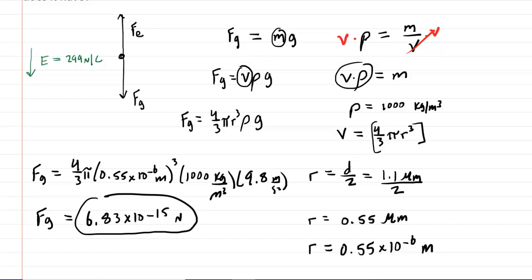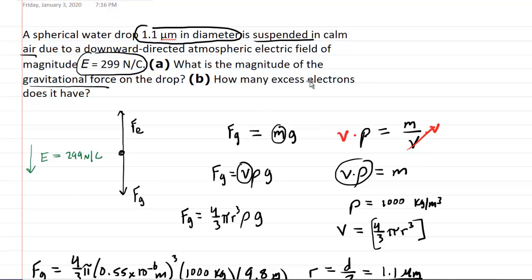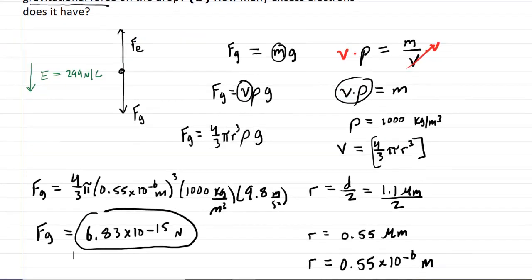Now, for part B, we are asked to determine the number of excess electrons. And it turns out that going back to our free body diagram is going to be helpful here.